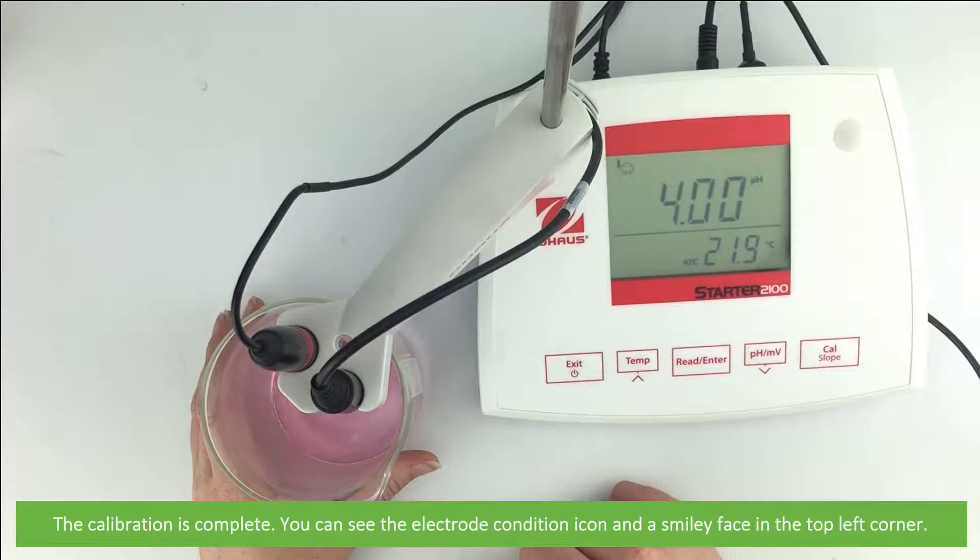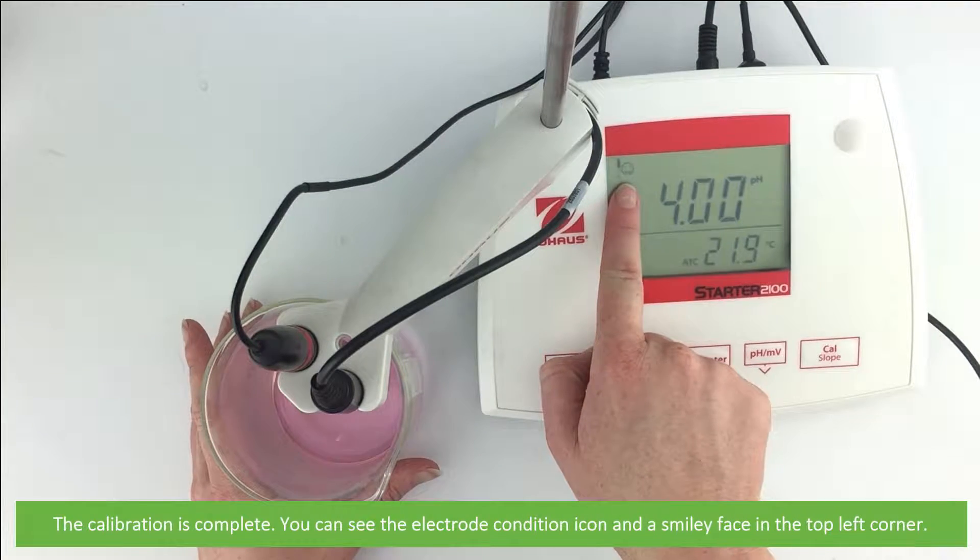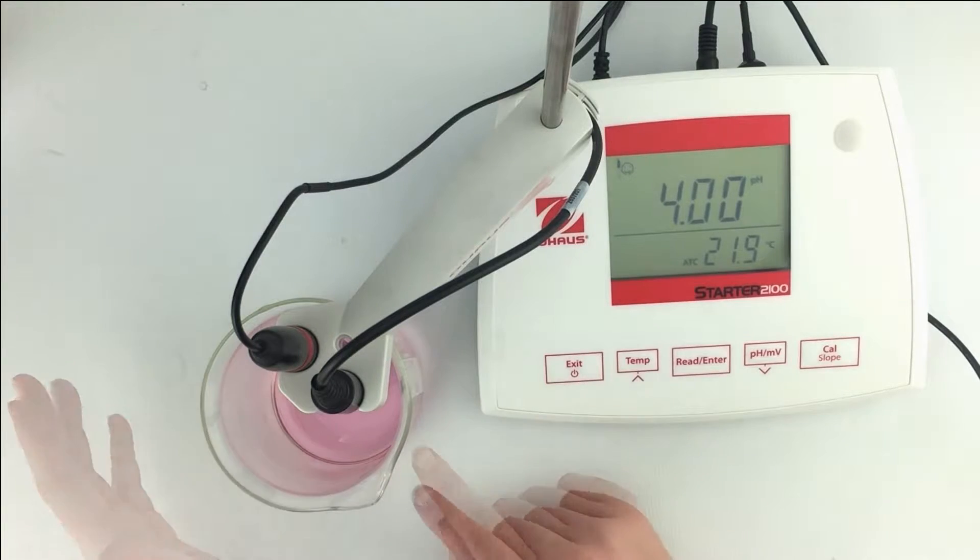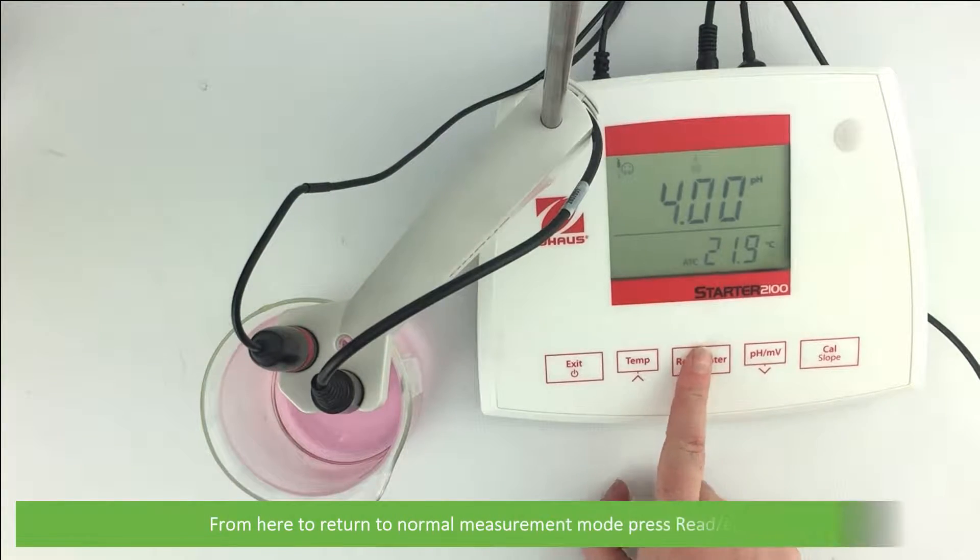The calibration is now complete. You can see the electrode condition icon and a smiley face on the top left corner. From here to return to normal measurement mode press read slash enter.